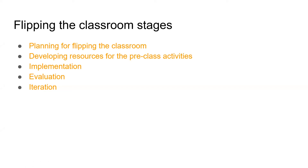The five stages are: planning for flipping the classroom; developing resources for the pre-class activities; implementing; evaluating; and then moving to the next iteration. Like any curriculum or course intervention, it's always good to evaluate and then go to the next iteration, because designing for learning is an ongoing process.